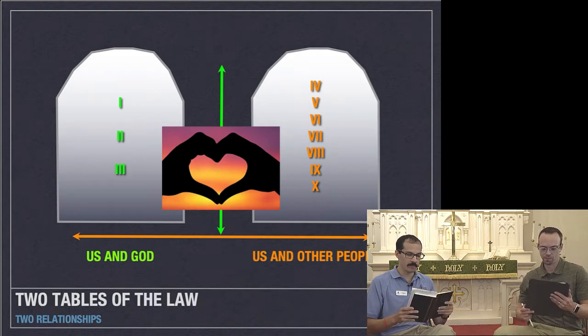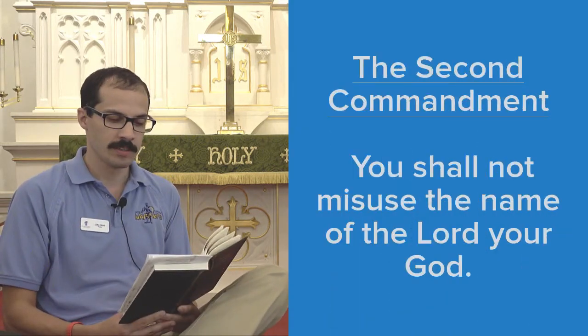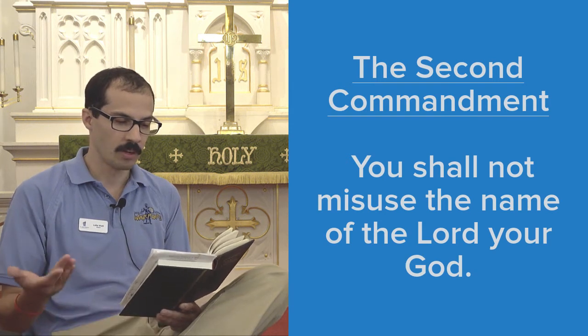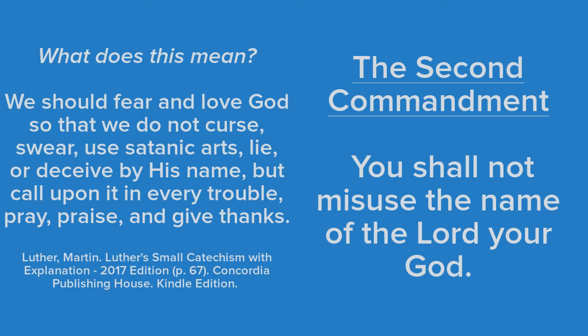So we're going to be in the explanation of Luther's Small Catechism. On page 67 we have the second commandment: 'You shall not misuse the name of the Lord your God.' What does this mean? 'We should fear and love God so that we do not curse, swear, use satanic arts, lie, or deceive by his name, but call upon it in every trouble, pray, praise, and give thanks.'